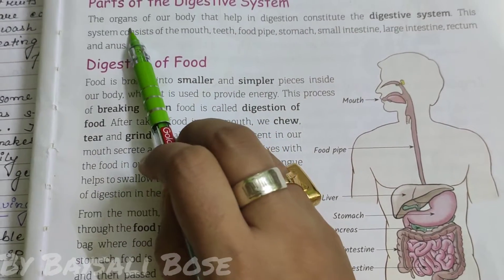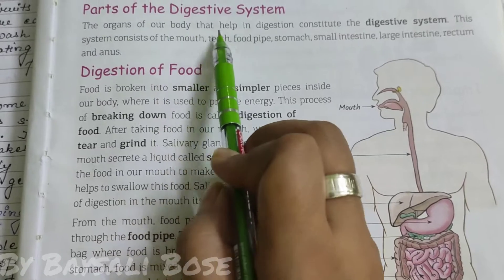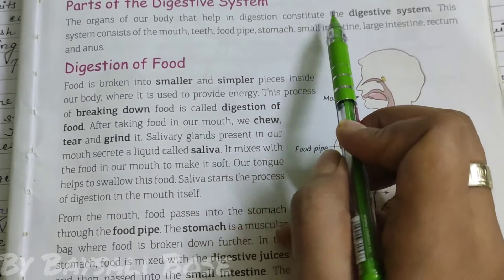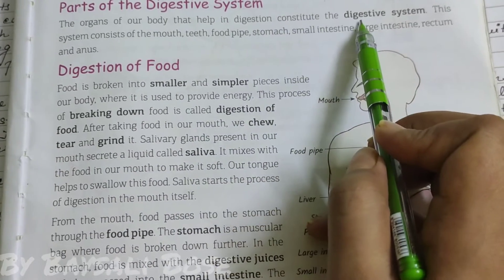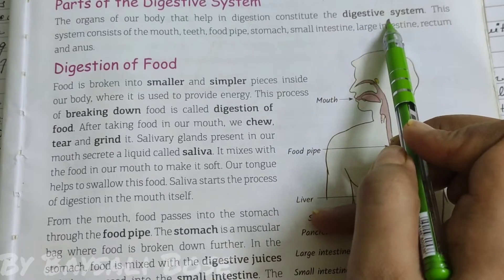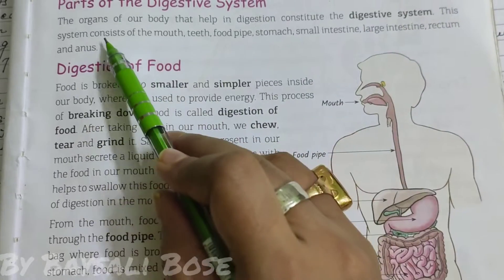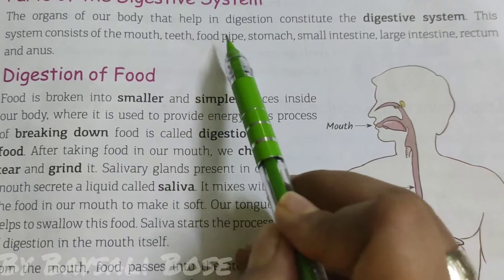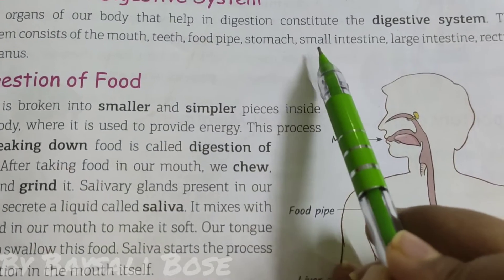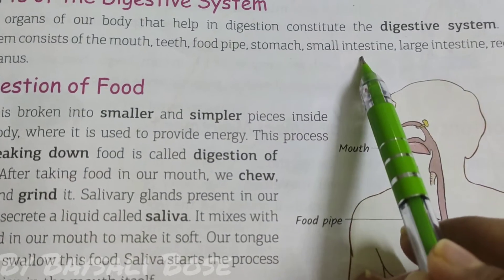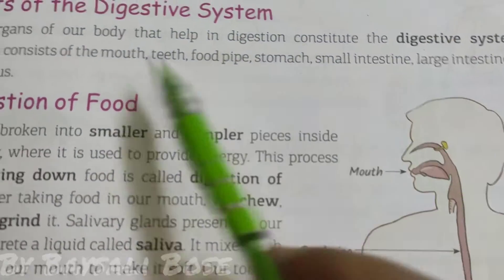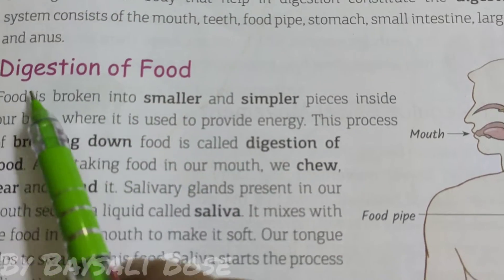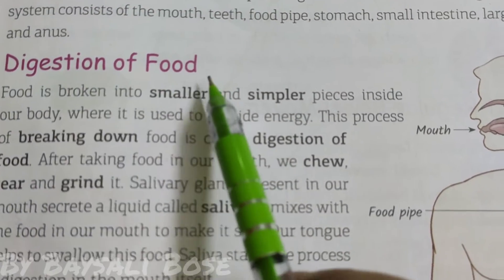The organs of our body that help in digestion constitute the digestive system. This system consists of mouth, teeth, food pipe, stomach, small intestine, large intestine, rectum and anus.